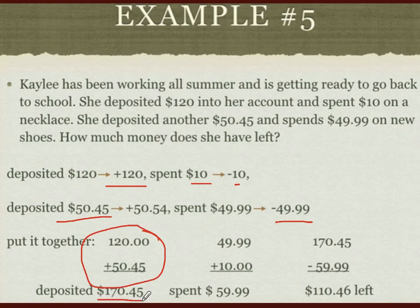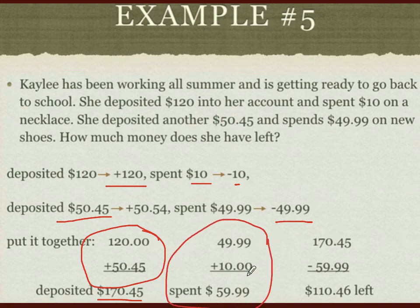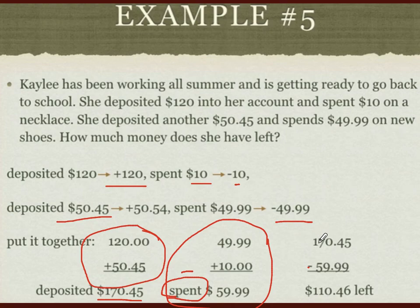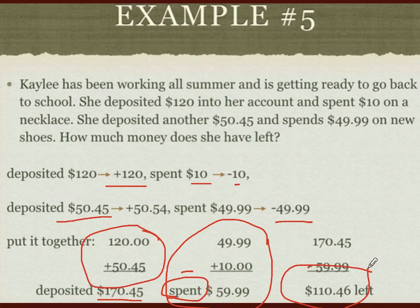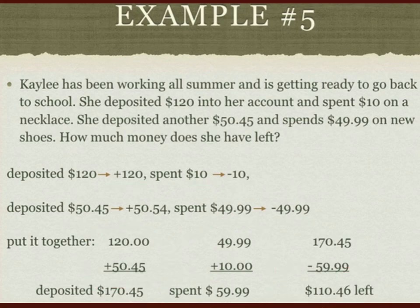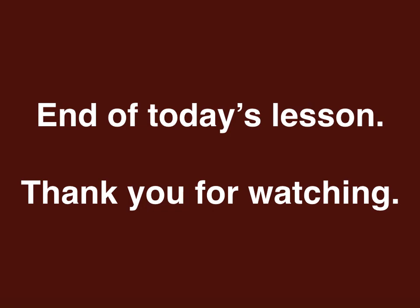Let's add all the positive numbers together: $120 + $50.45 = $170.45 total deposited. Then all the money spent: $49.99 + $10.00 = $59.99 total spent, which is negative. Subtracting $59.99 from $170.45 gives $110.46. That is the money left in her account. Does it make sense? Yes, because she deposited much more money than she spent. This is the end of the lesson for today. Thank you for watching and hope you enjoy. Have a good day.